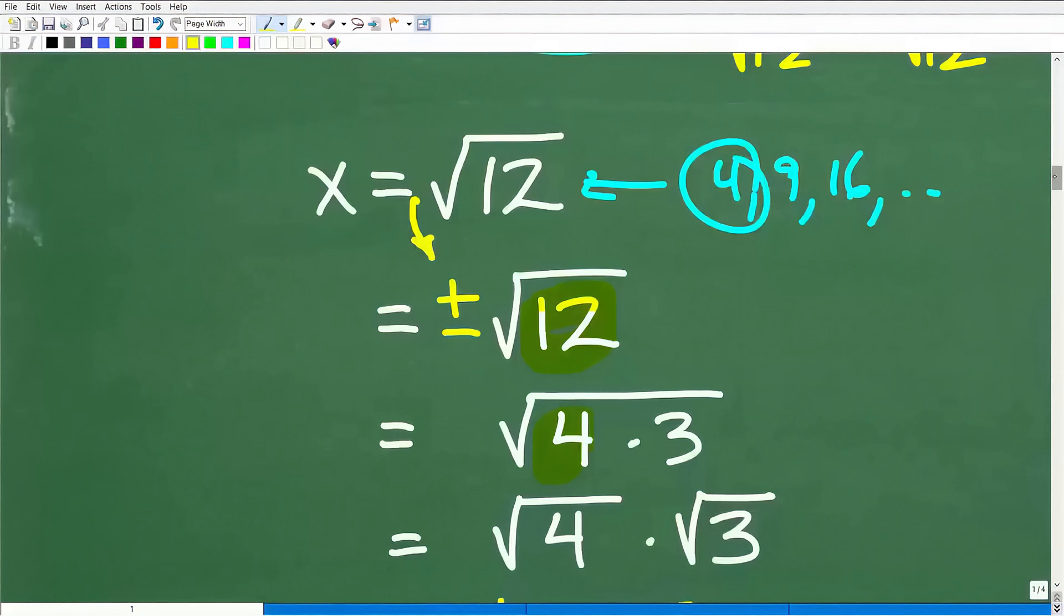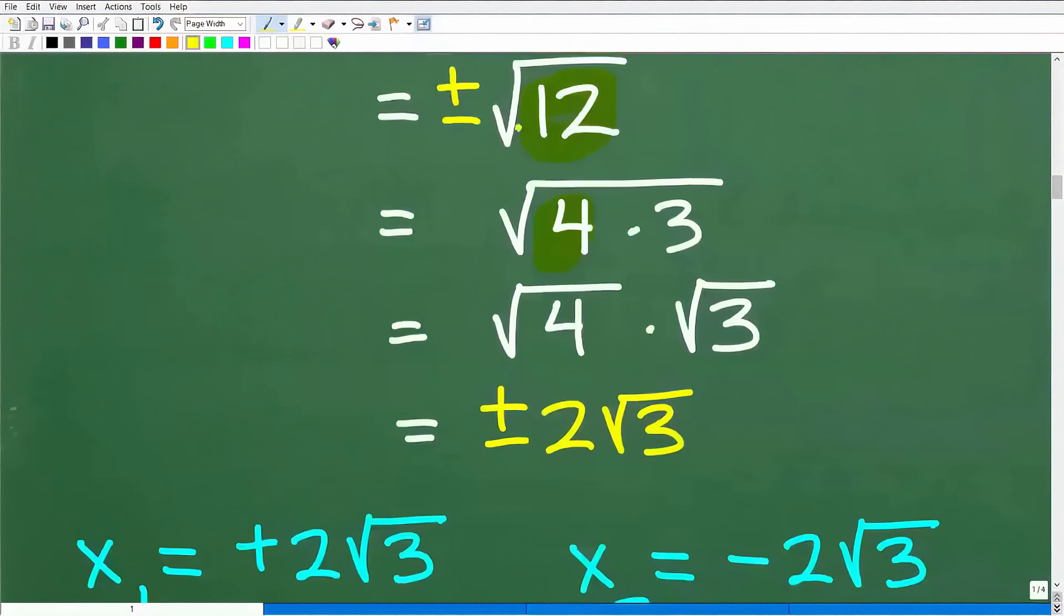So now we want to clean this up. The square root of 12 we can write as the square root of 4 times 3. We have these properties of square roots where I can pull these factors apart. So I have the square root of 4 times the square root of 3 in our own individual square roots. And that is awesome because now I can take the square root of 4, which is positive and negative 2 times the square root of 3.